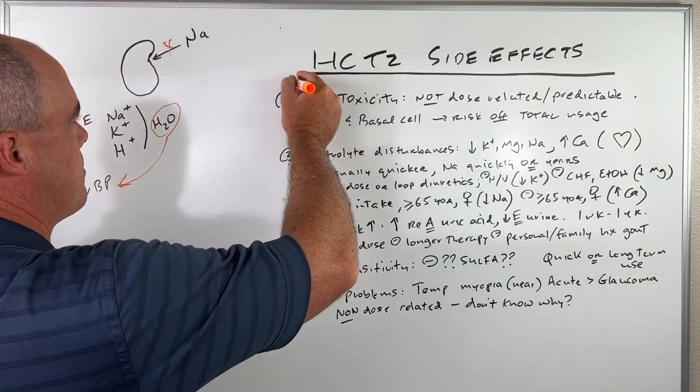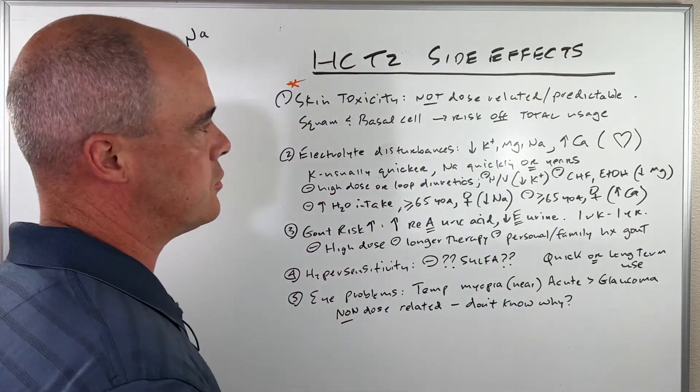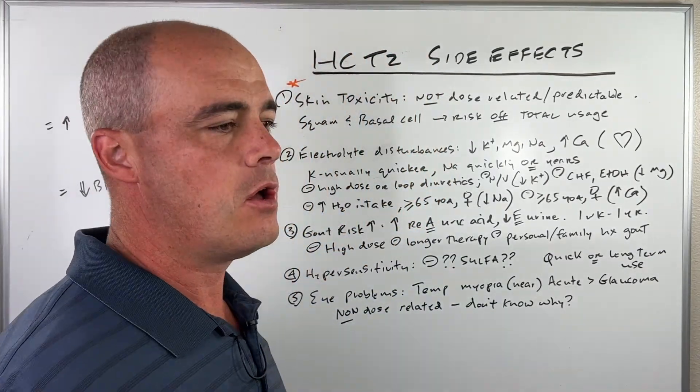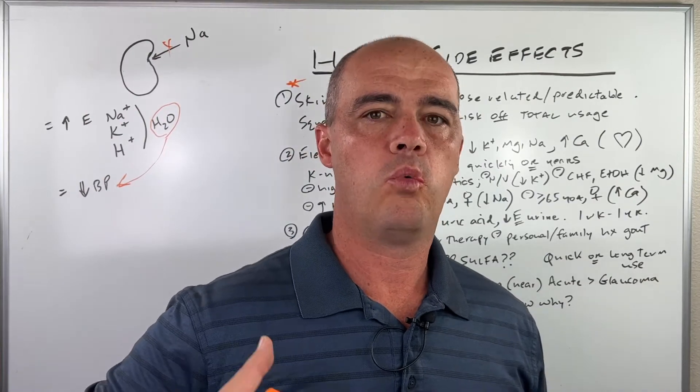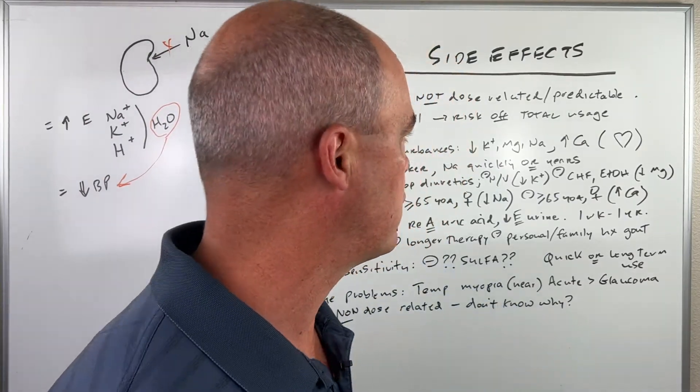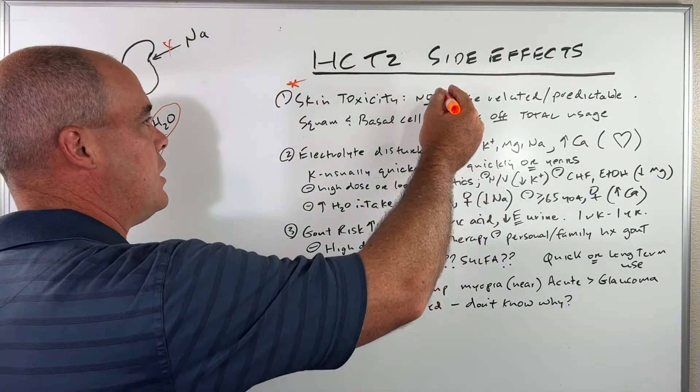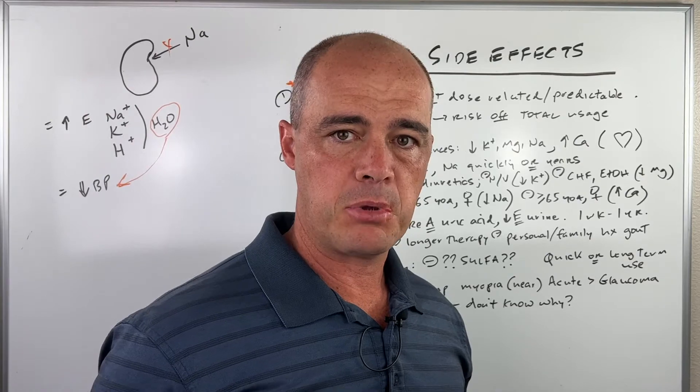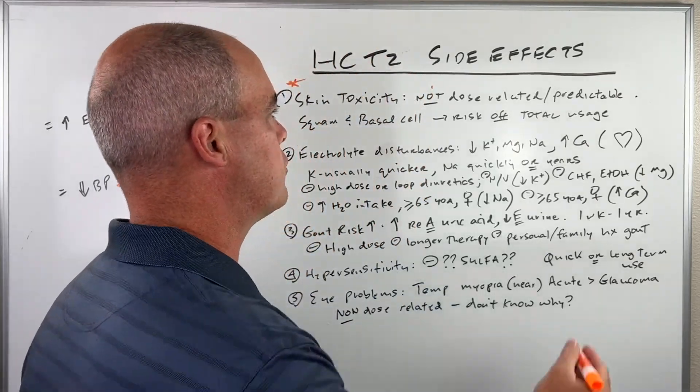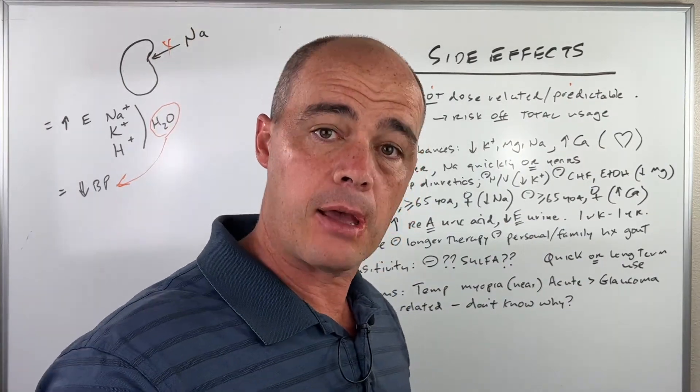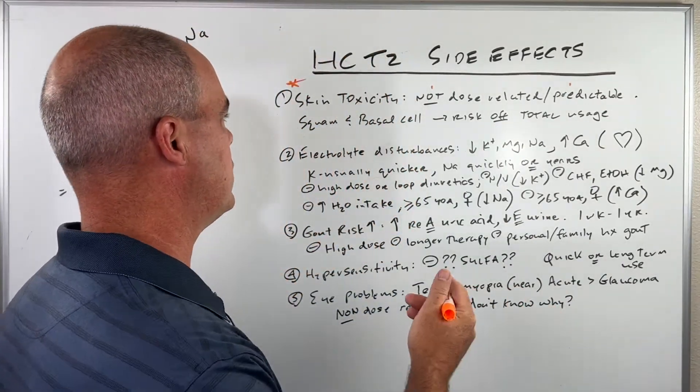So the first one that we worry about with HCTZ, actually not the first one but the first one I will cover, is skin toxicity. And that means photosensitivity. Some people will go out in the sun and they're going to sunburn easier, and sometimes it can be serious. So the thing to know about it is it's not dose related. It can happen at a low dose, it can happen at a high dose, and there is no way to predict it. So when people say, will this happen? I don't know. We really don't know.